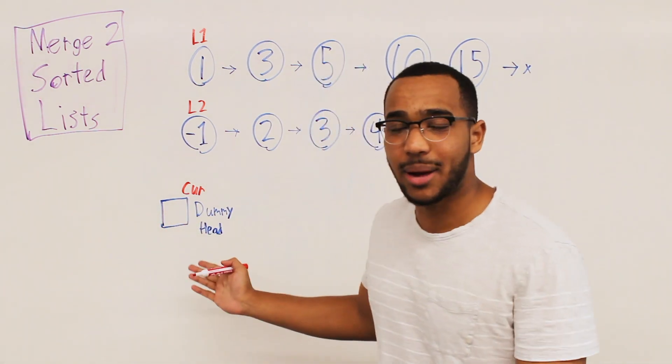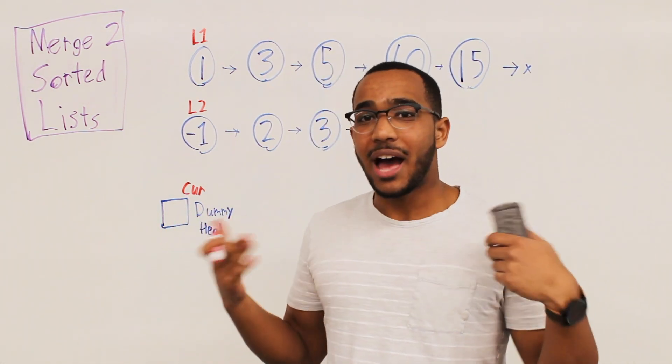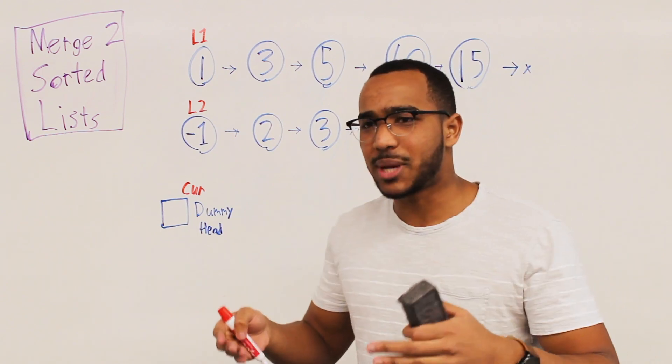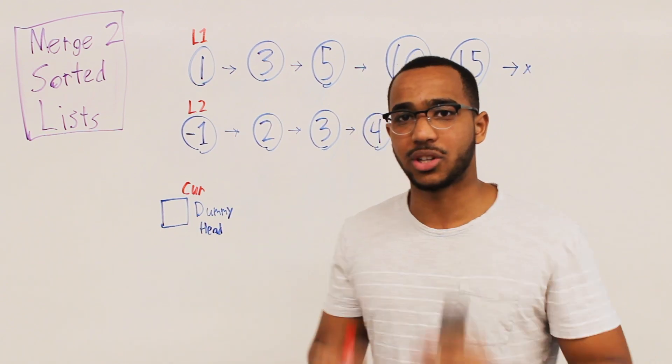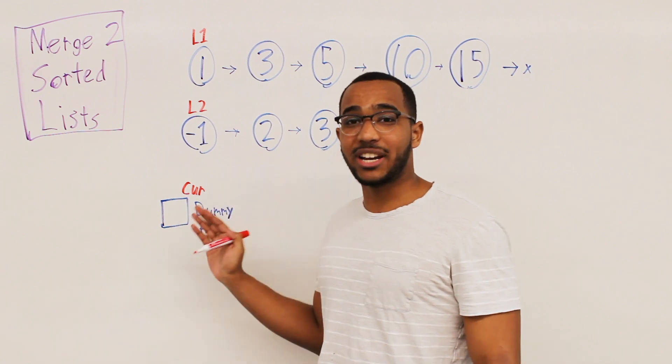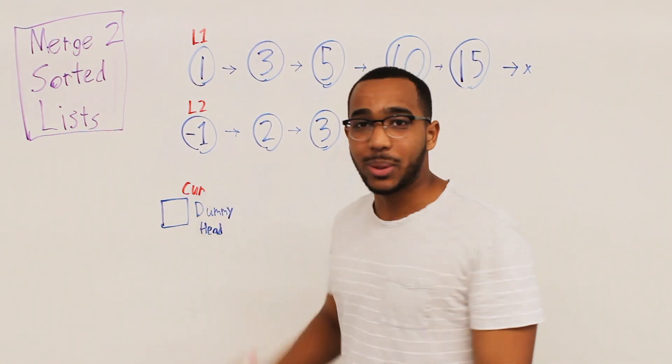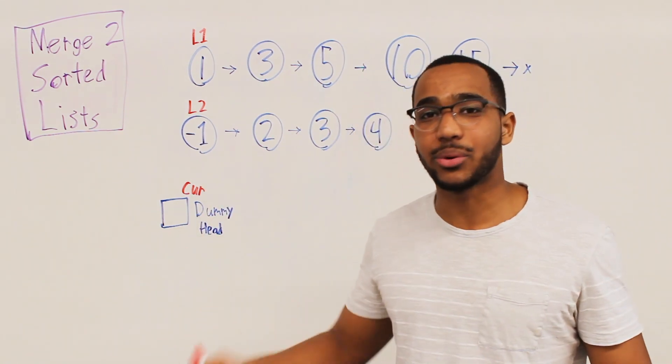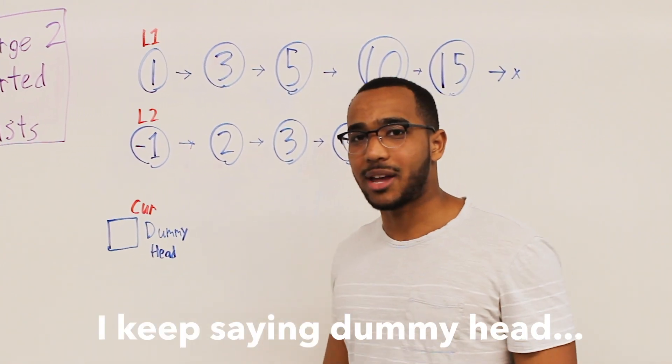So what I'm going to do is I'm going to build my list off of cur. If I didn't have a dummy head, what if cur is null? What if cur has nothing? I can't just say cur.next because what if the actual value of cur is null? A dummy head node gets rid of this problem by when we point to cur, I know it's going to have a value. It's just going to be my dummy head.